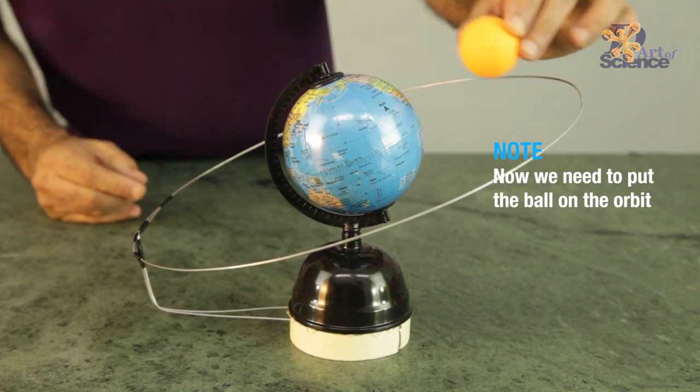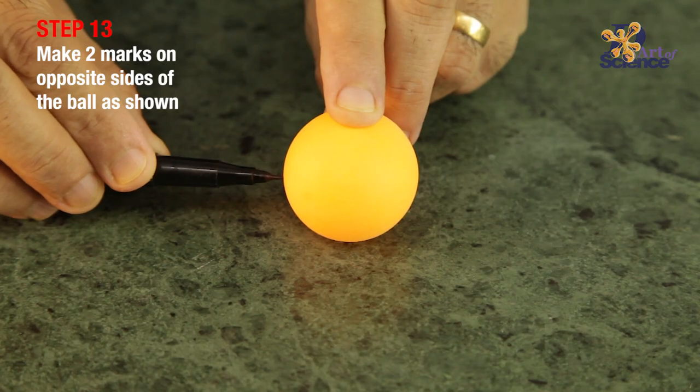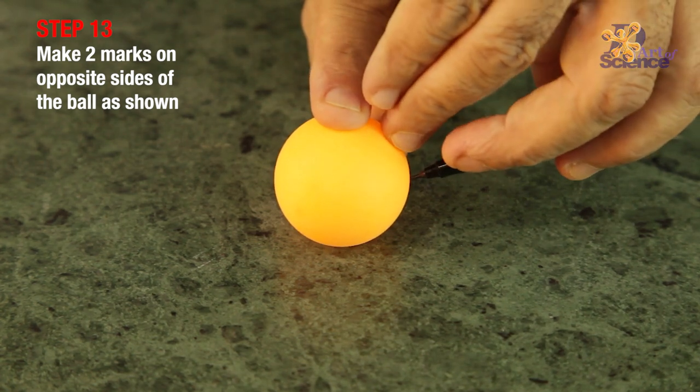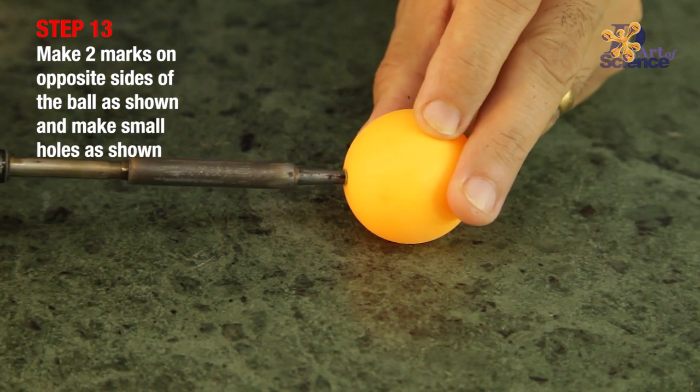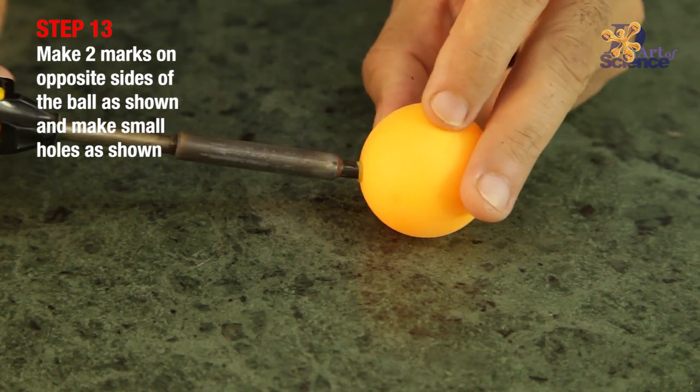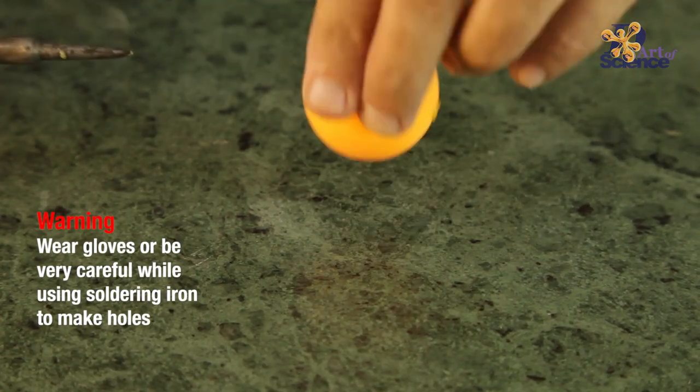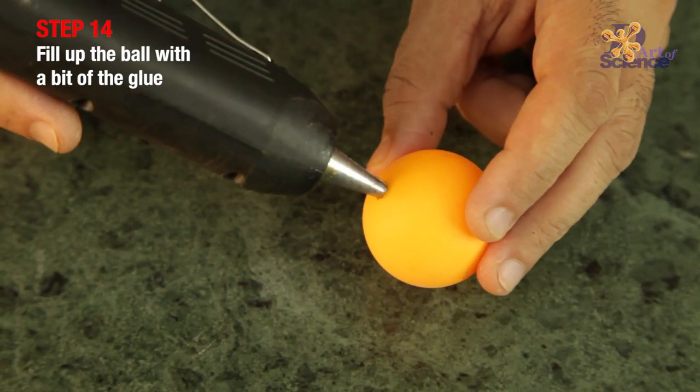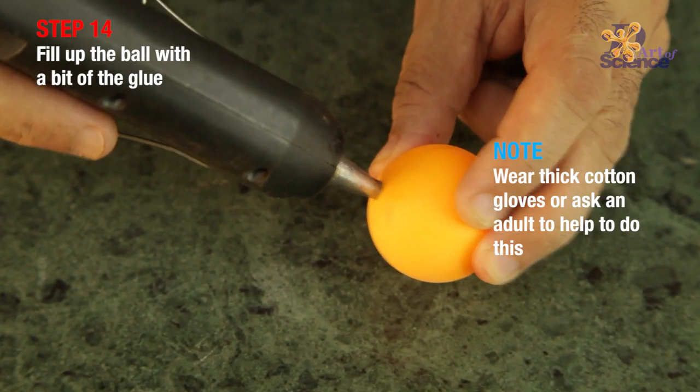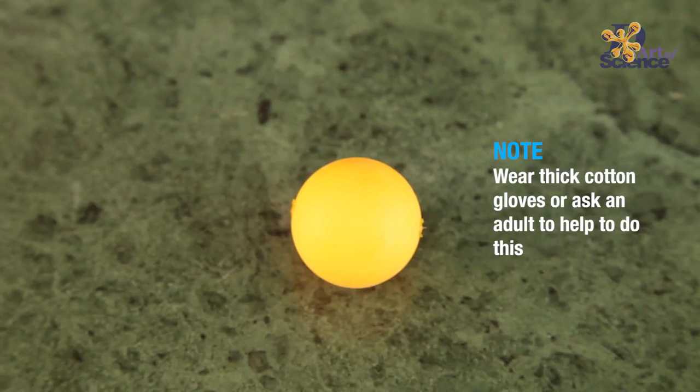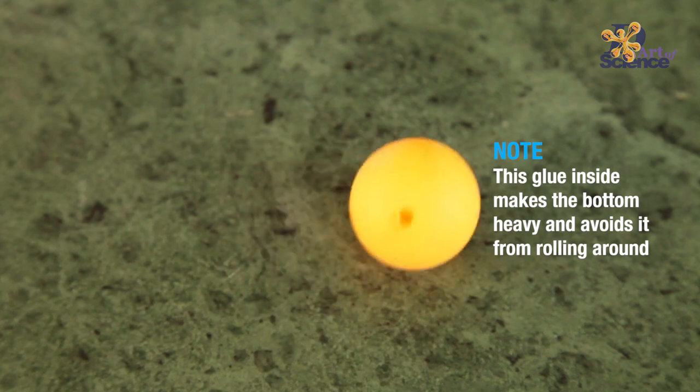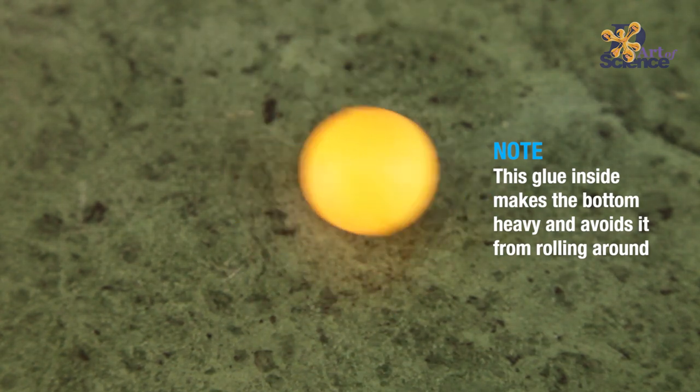Now you need to put the ball on the orbit. For that you first need to mark the ball at 2 opposite points. And then make small holes which you can do with a soldering iron. Then fill up the ball with a bit of the glue. You should definitely wear thick cotton gloves to do this or ask an adult to help. This glue will make the bottom heavy and keep the moon standing otherwise it will keep rolling around.